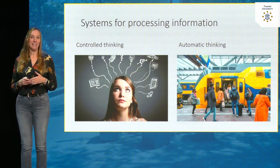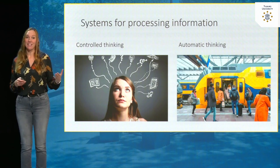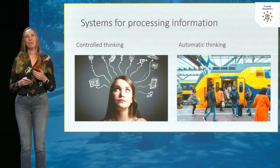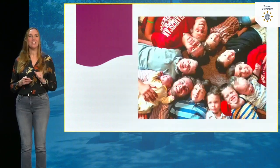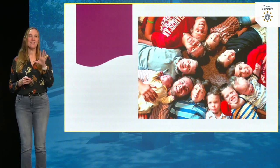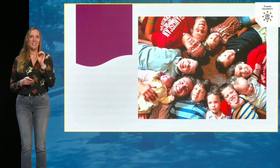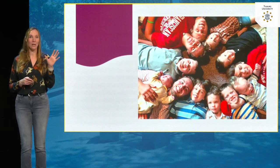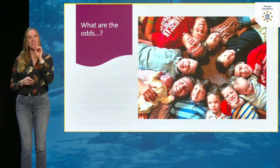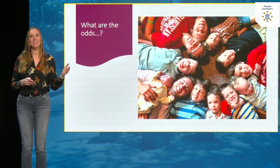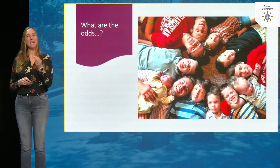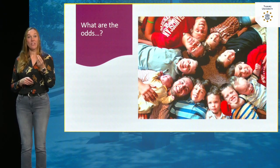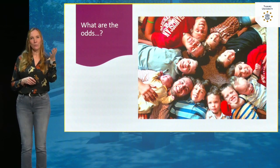Sometimes even when we really try our best to make good decisions, our brain works in ways that we still end up making bad decisions. Let me start with an example. Here you see a family — all kids of one set of parents — they have 12 kids and they are all boys. Now let's imagine the mother got pregnant again. If I ask you to estimate whether the next kid will be a boy or a girl, what would you guess?